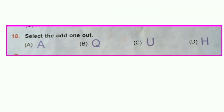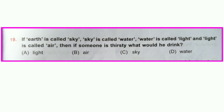Question number eighteen: Select the odd one out. Letters A, U, and H have a line of symmetry that can be drawn through them, but we cannot draw a line of symmetry in Q. So option B is correct — Q is the odd one out.